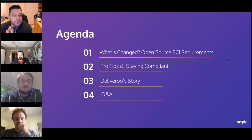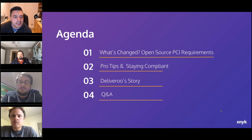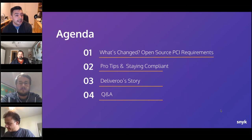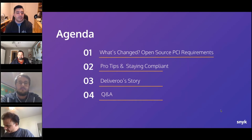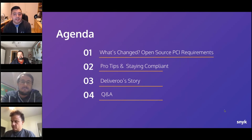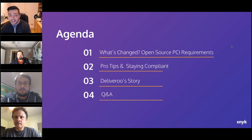We're going to cover what's changed in PCI requirements — Jim Manico will present that for about 15 minutes. We also have Alexi Pivkeen talking about pro tips for staying compliant and how Snyk can help. Then for about 10 minutes we'll hear a real case study from Adam Thompson of Deliveroo, followed by Q&A. You're welcome to ask questions through the GoToWebinar control panel.